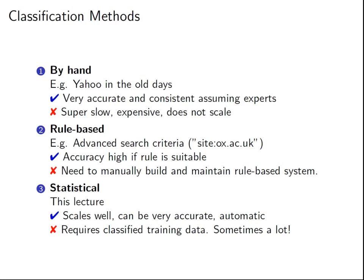The third category — and the one we're most interested in here — is statistical classification. The idea is that we automatically learn how to classify the data. By letting a computer do the heavy lifting, this can scale well, and if set up properly, accuracy can still be very high. The downside is this requires labeled training data. We need both the document and its label — the class we want to associate it with. Depending on the model, this could require a lot of data.